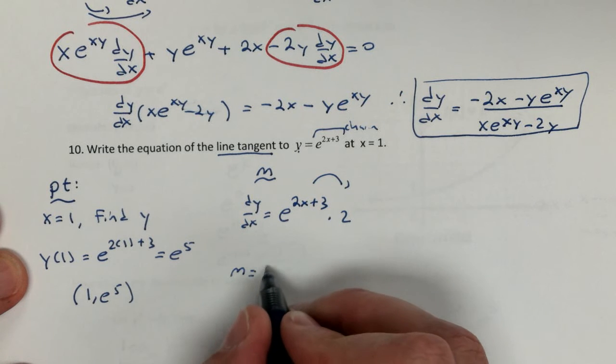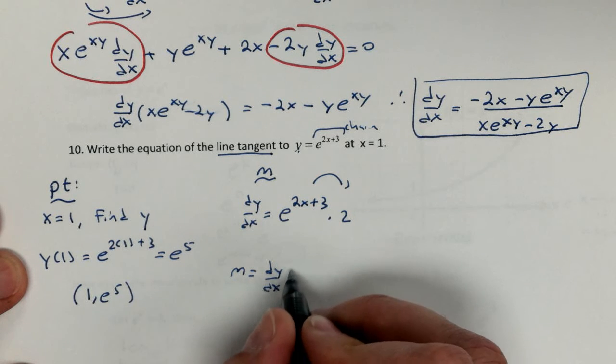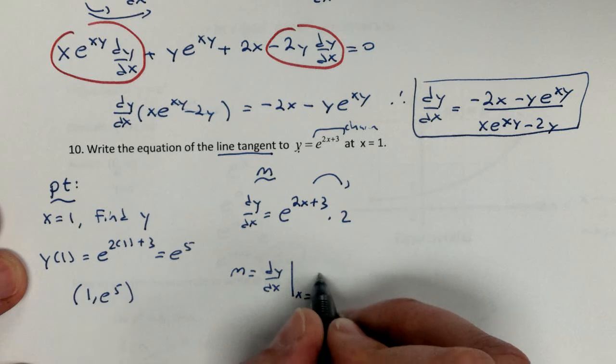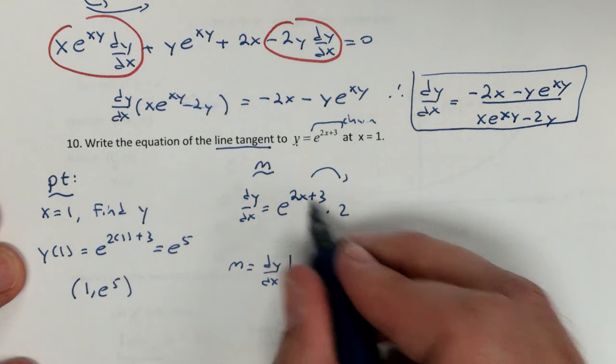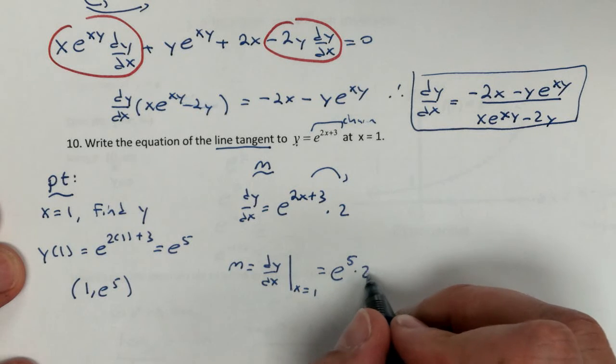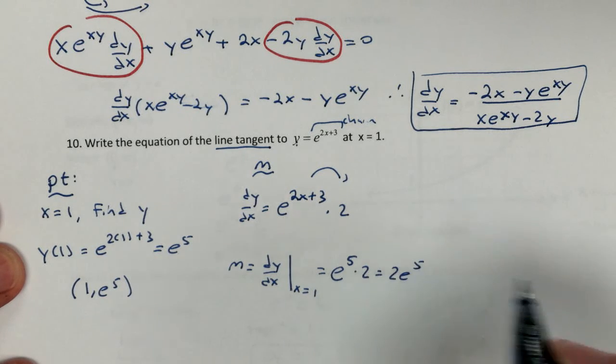To get my slope, I'm going to use that fancy notation we talked about, dy dx at x equals 1. And I just plug it in. This becomes e to the 5th times 2. So I get 2 e to the 5th. There's my slope.